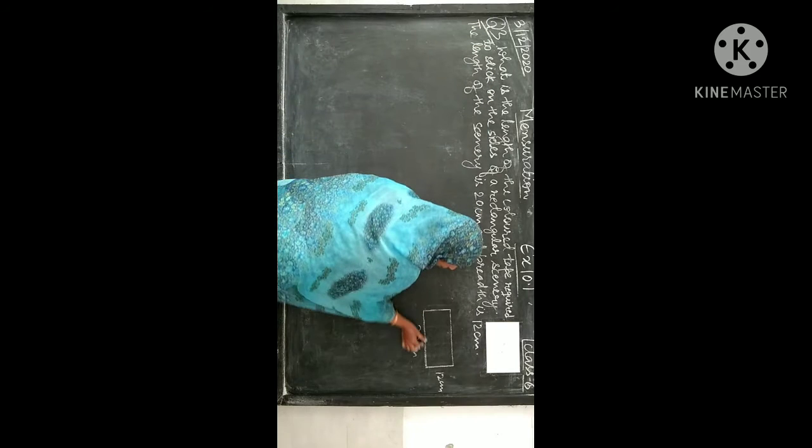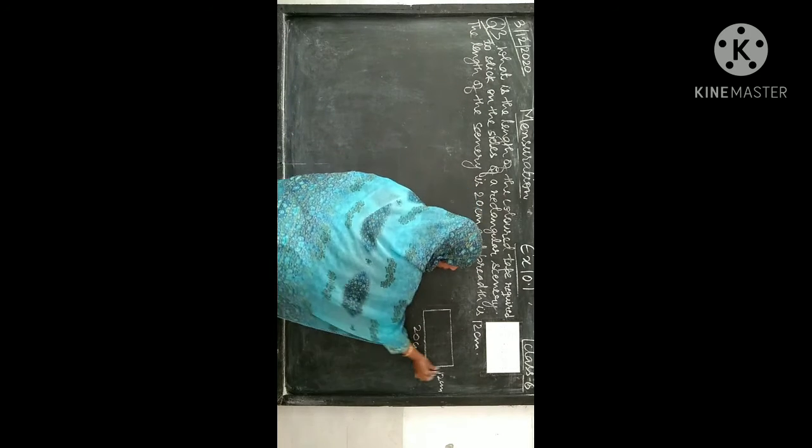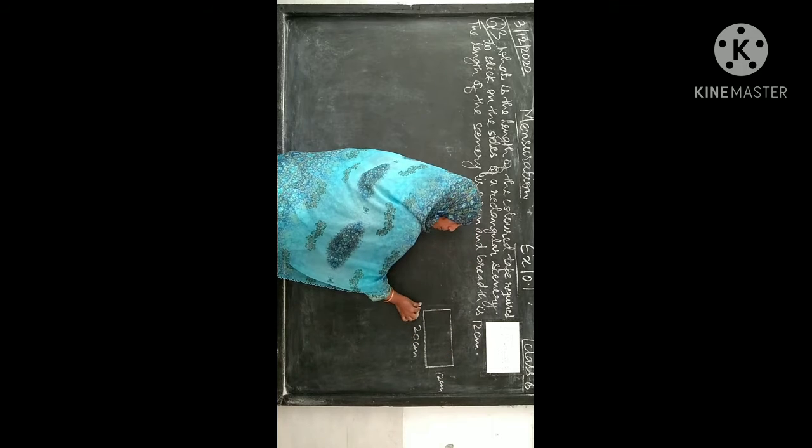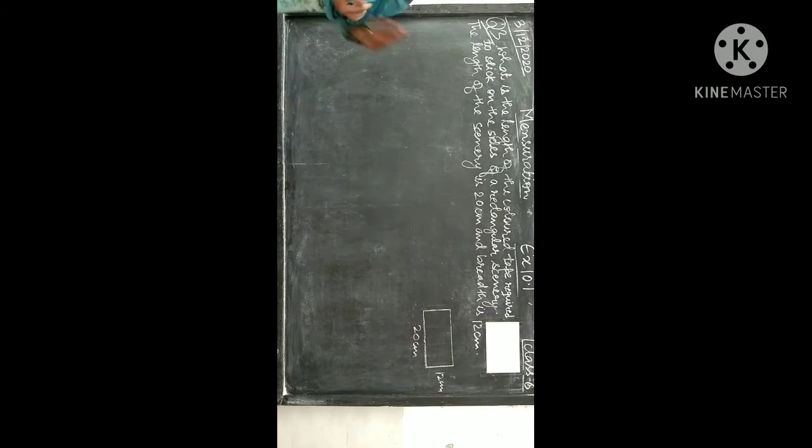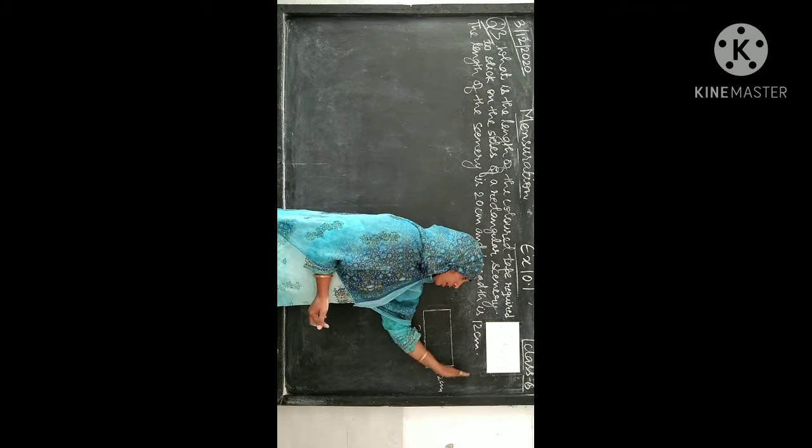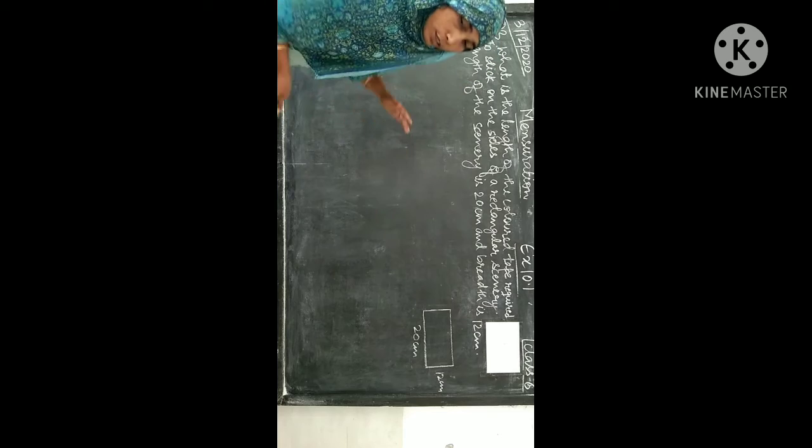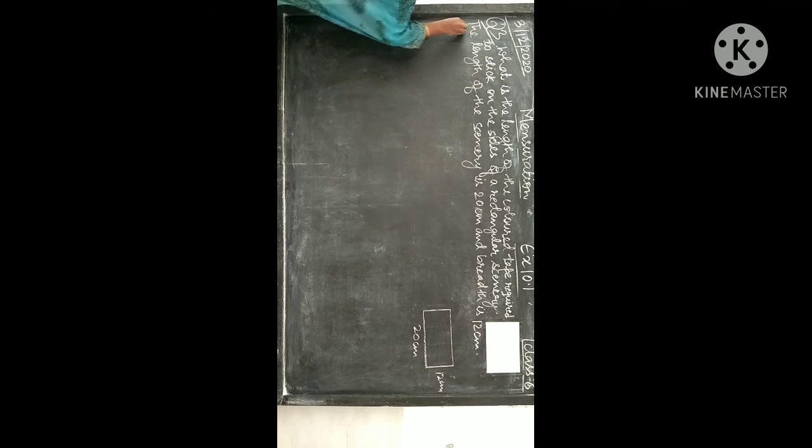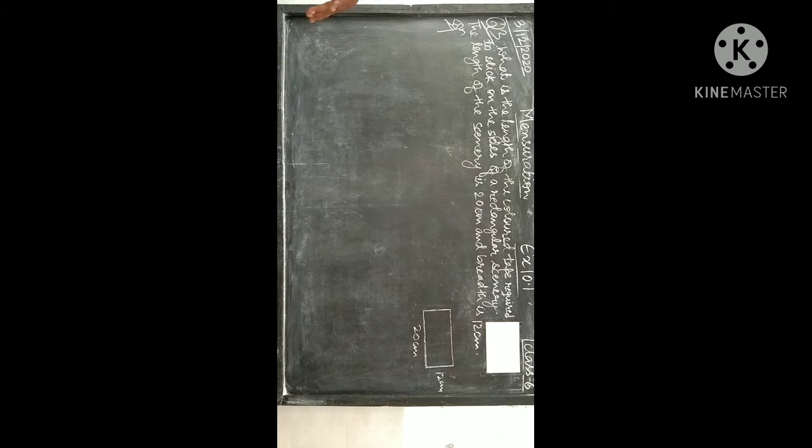So let's say, agar aap ko color tape yaha boundaries per lagana hai, to boundary ki length aap ko pata honi chahiye, right? Or boundary ki length ko hum kya bolte? Perimeter bolte. Means aap ko nikalna kya hai? Is rectangular jo scenery aap ko di gayi, iska perimeter find out karna hai. To yaha par aap ko rectangle ka perimeter find out karna hai.